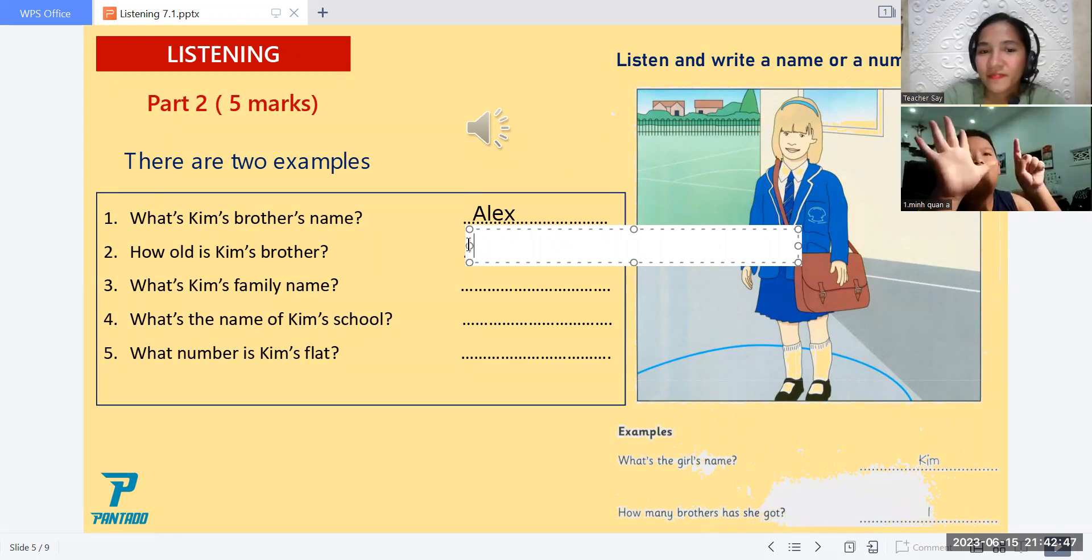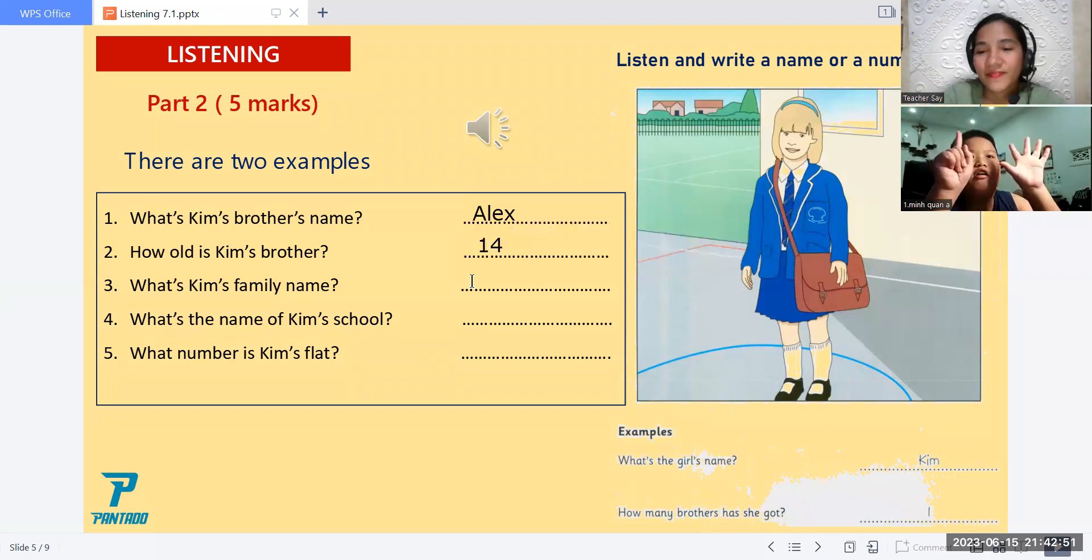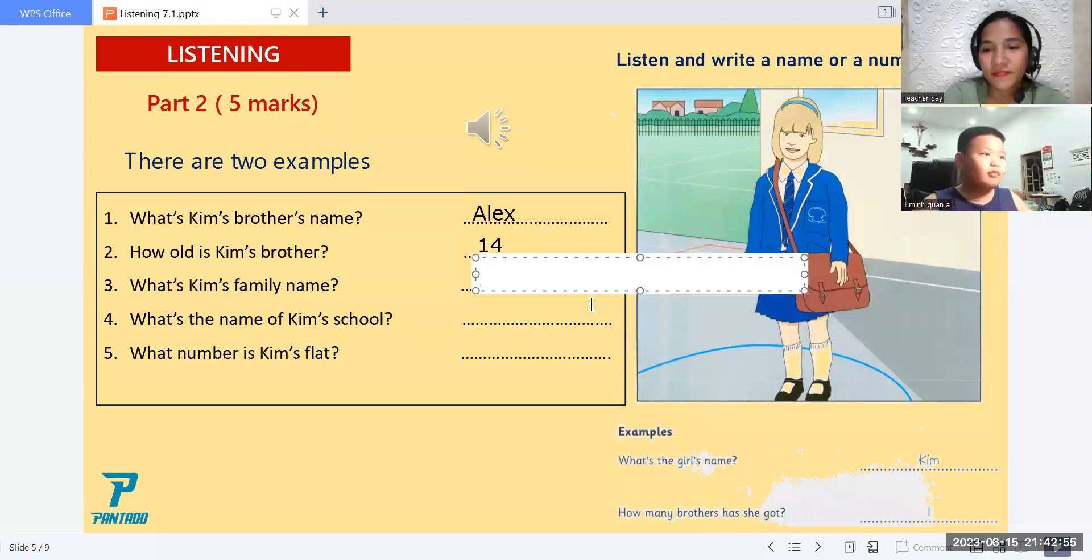Three. And what's Kim's family name? It's Brown. How do you spell that? Is it B-R-O-W-N? Yes, that's right.